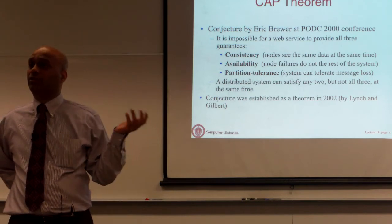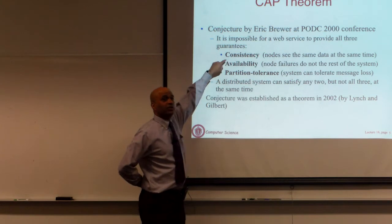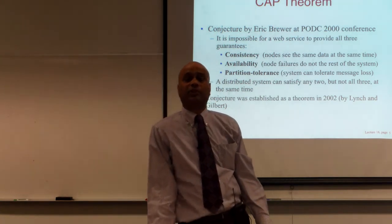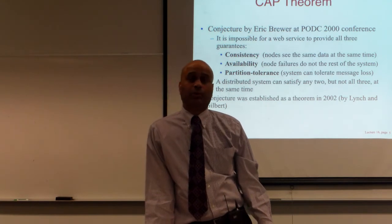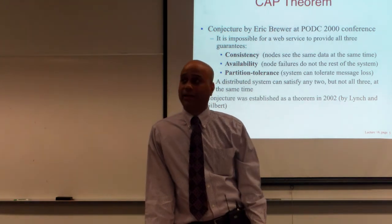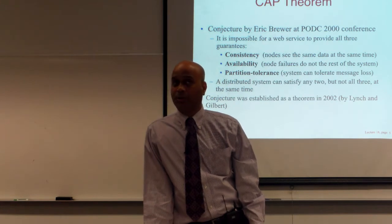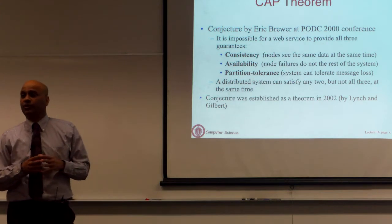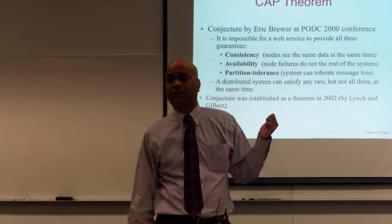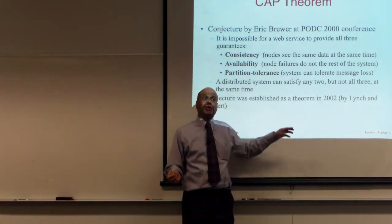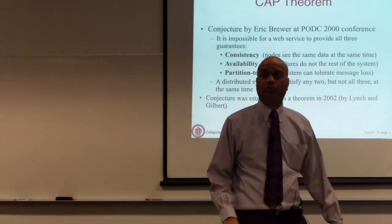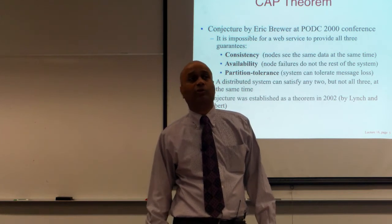Ideally you would like all three properties in a distributed system, because you might have updates making things inconsistent, nodes may go down, or messages may get lost. But the CAP theorem says that if you design a distributed system, you can only get two of those three properties. You will have to pick which two you want — you cannot get all three. If you pick two, the other one is not possible. This was proposed as a conjecture by a distributed systems researcher from Berkeley, and was later proved under certain scenarios.